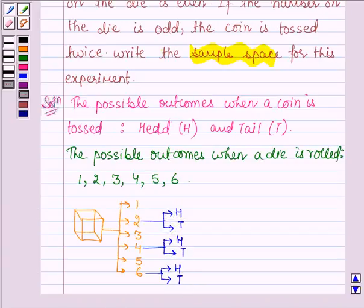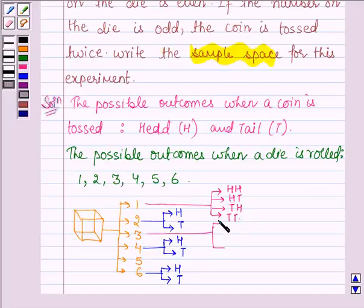If the number which appears on the die is odd, then the coin is tossed twice. If 1 appears, there are four possible outcomes: head-head, head-tail, tail-head, or tail-tail. Similarly, when 3 appears, the coin is tossed twice.